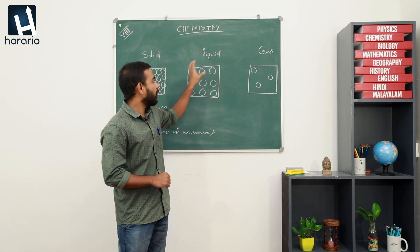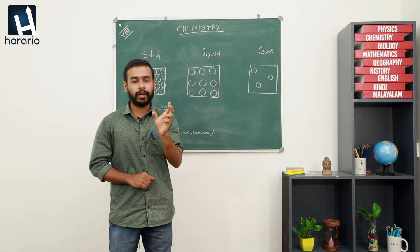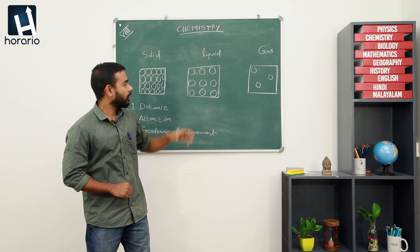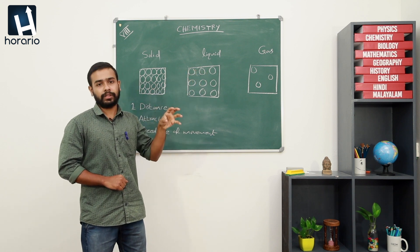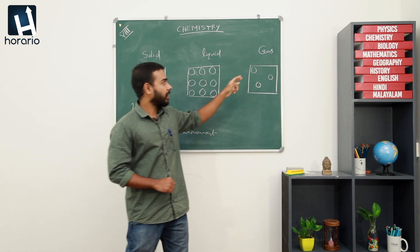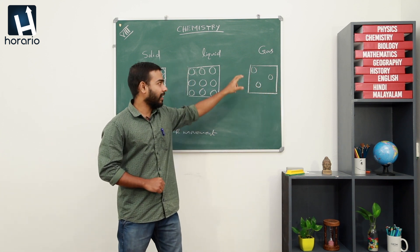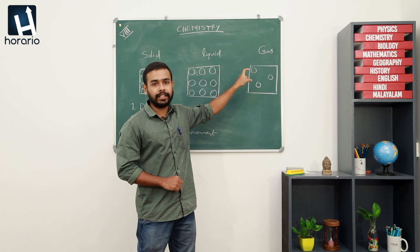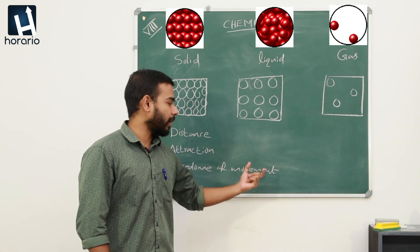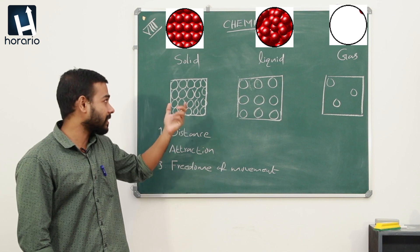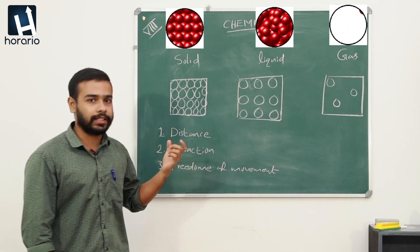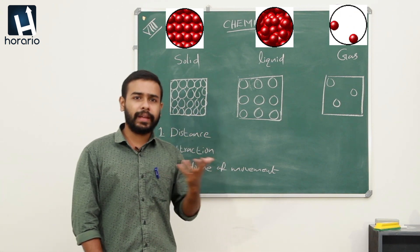The attraction between adjacent particles of liquid is considerable — neither strong nor weak — and that is why they are not much loosely packed. There is a small attraction between the adjacent particles. In gaseous substances, there is weak attraction between adjacent particles. That is why they are separated by a long distance. In solid substances, there is little or no movement between adjacent particles because they are tightly packed — there is no space for movement.